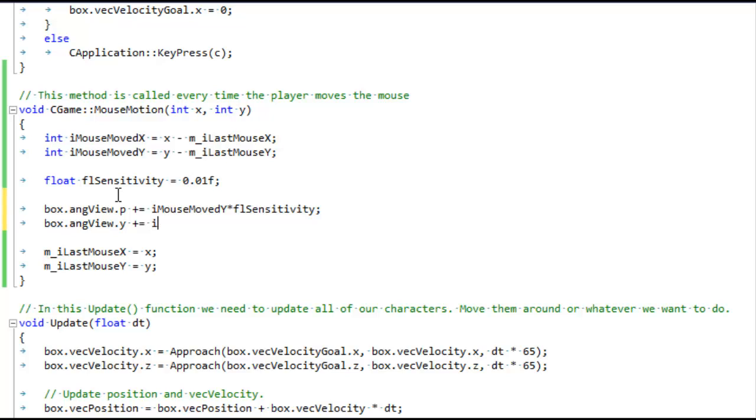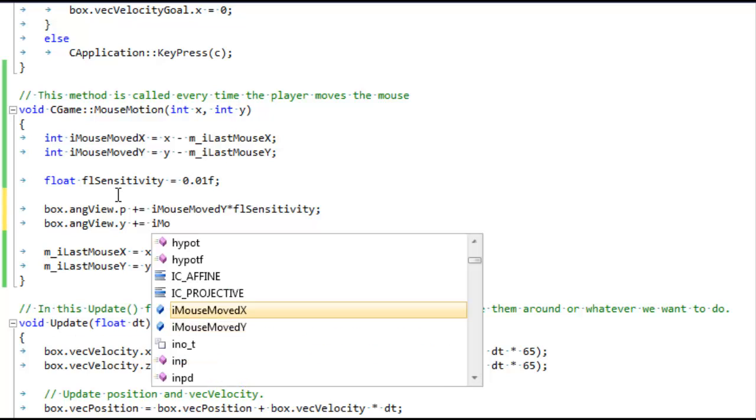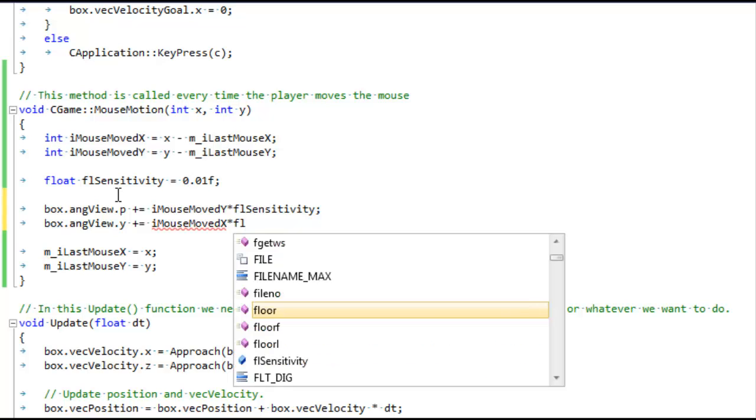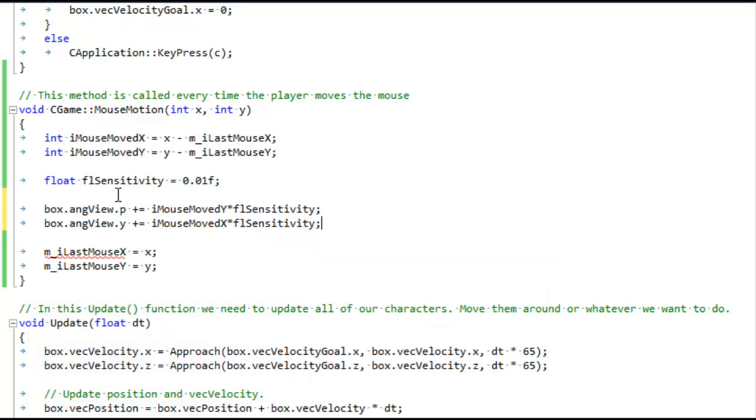And let's do the same thing for yaw. Yaw is determined by the x, the lateral movement of the mouse. And then we'll throw that sensitivity in there. And one thing left, we have to normalize. We're going to call that normalization method that we mentioned before.